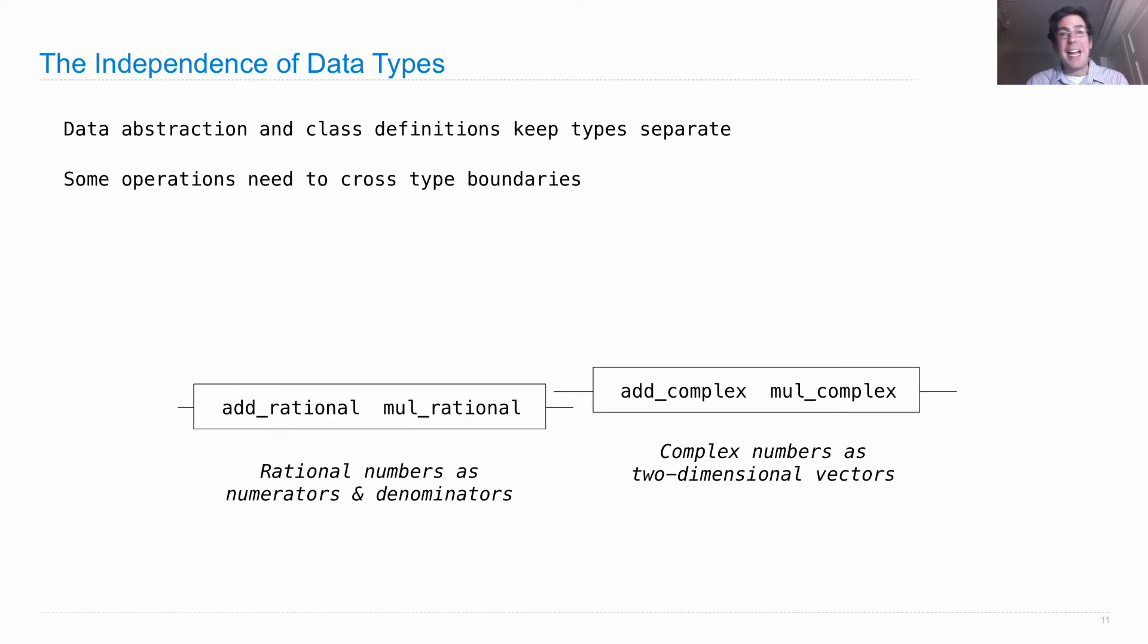But what happens if we want to add a rational number to a complex number? Well, then we actually need to know both of these things. It would be nice to have all of our program live up here and never have to know the representation of either of these numbers.